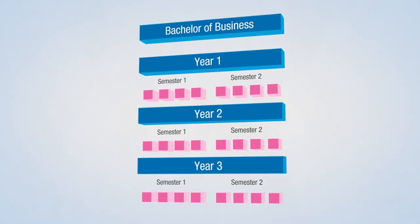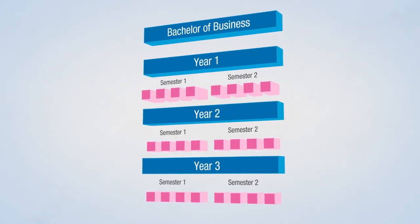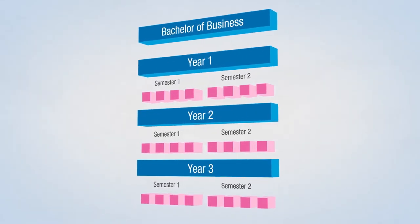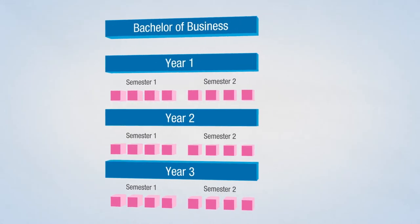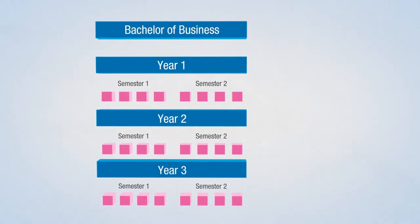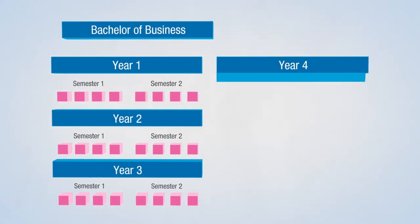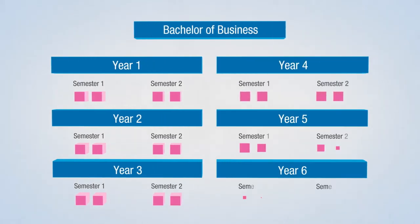If you're studying full-time, you'll usually study four units each semester. Some students choose to speed up their studies by taking units in optional winter or summer semesters. There are also part-time options for each course.